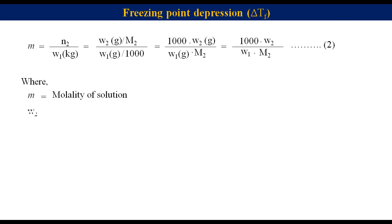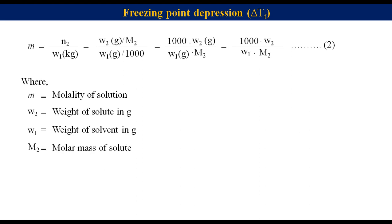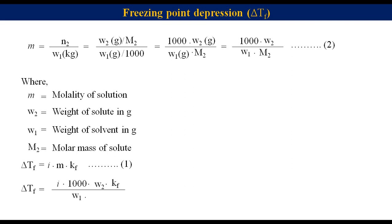Where w2 is the weight of solute in grams, w1 is the weight of solvent in grams, and M2 is the molar mass of the solute. From equation 1, delta Tf equals i times m times Kf. Substituting the expression for m gives equation 3: delta Tf equals i times 1000 times w2 times Kf divided by w1 times M2. This equation can be used for solving different numerical problems.